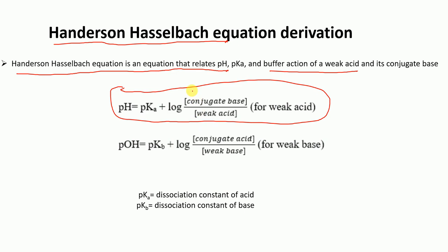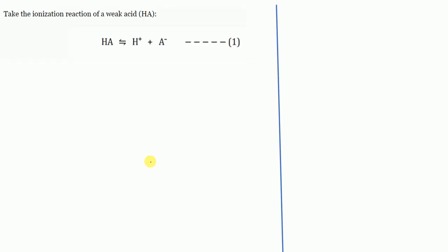The first form is the Henderson-Hasselbalch equation for weak acid, and the second is for weak base. Now let's discuss what pH, pKa, and pKb are. Let's take the ionization reaction of a weak acid. Say we have a weak acid HA — when it dissociates, it releases its proton H+.